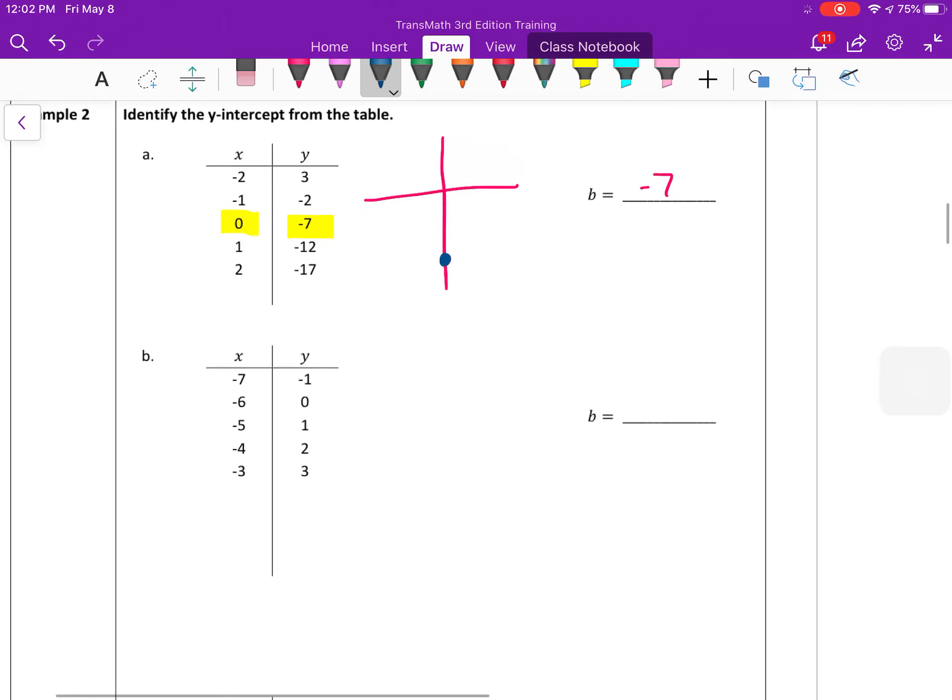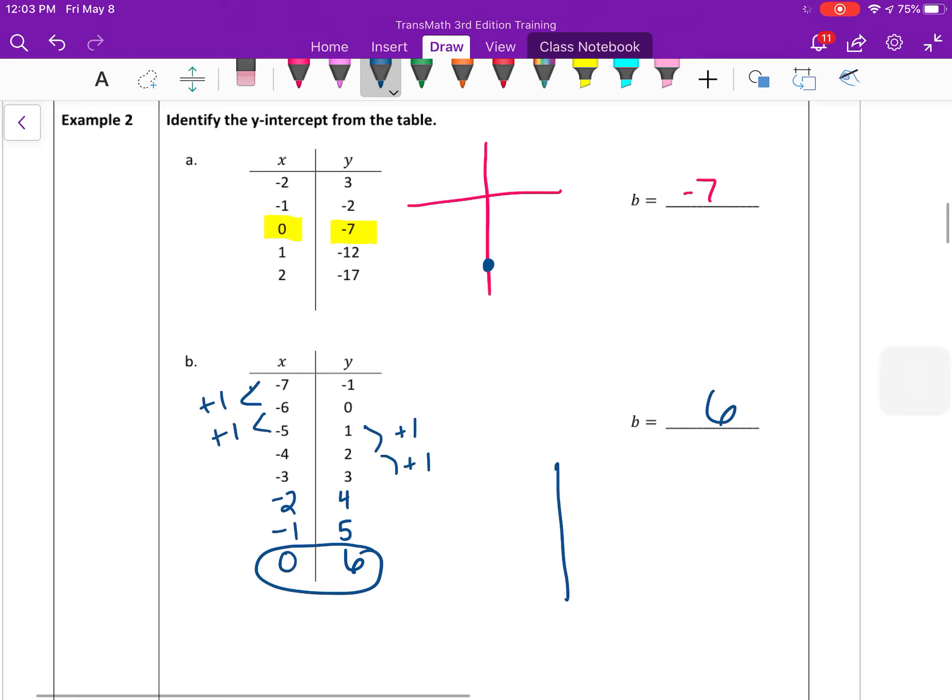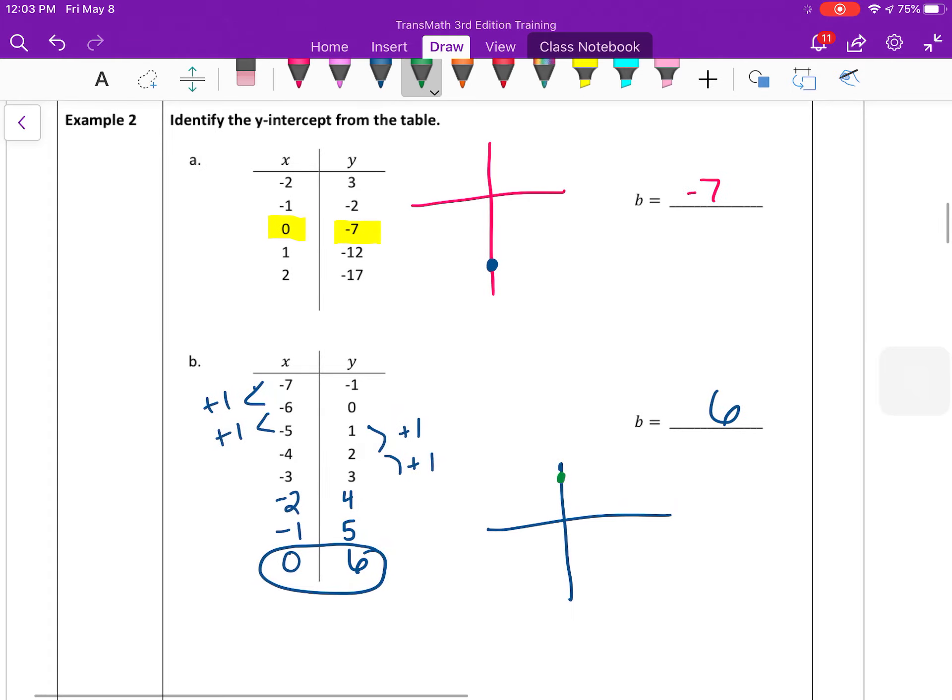In B, I don't have any x's that are 0. But if I continue this table, it looks like we're adding 1 every time on the left side. So if I continue, negative 3, negative 2, negative 1, 0. And then the pattern on the right seems to be adding 1 as well. So 4, 5, and 6. And then that gives me my y-intercept at positive 6, which is 0, 6 would be up here. Negative 1, 5. So your line would cross something like that.